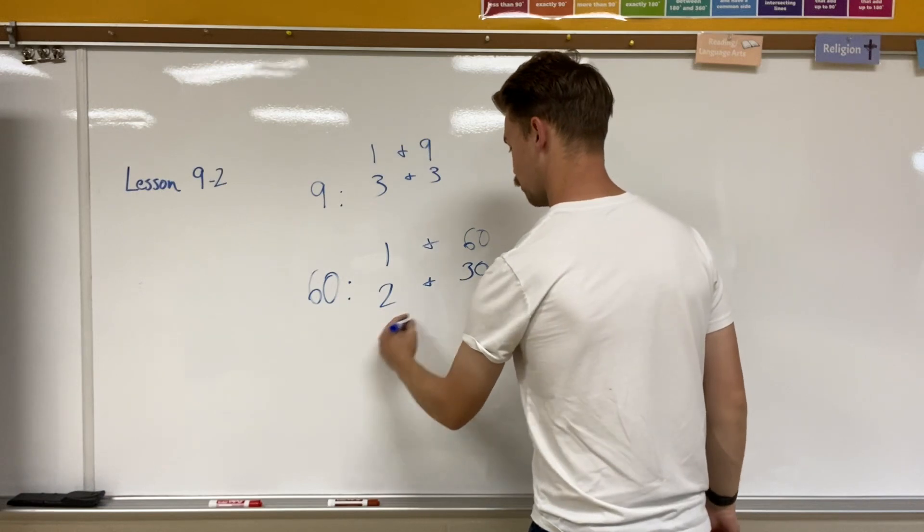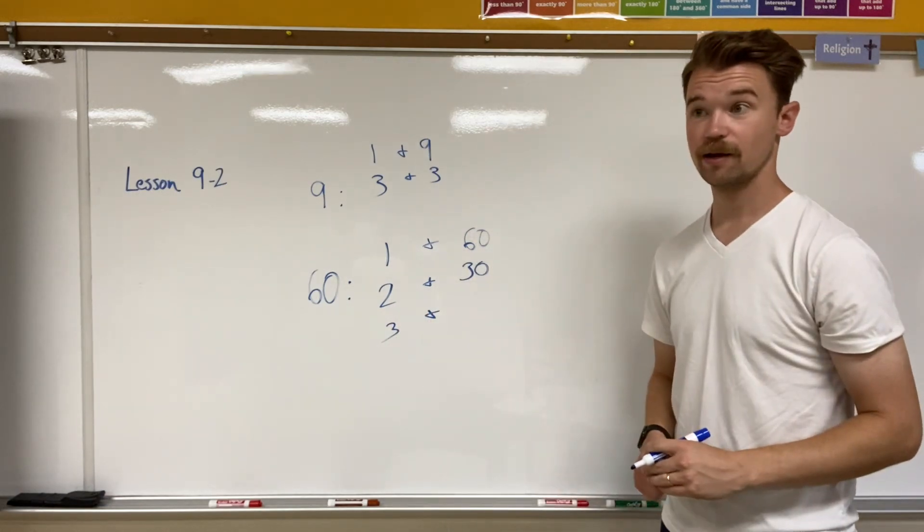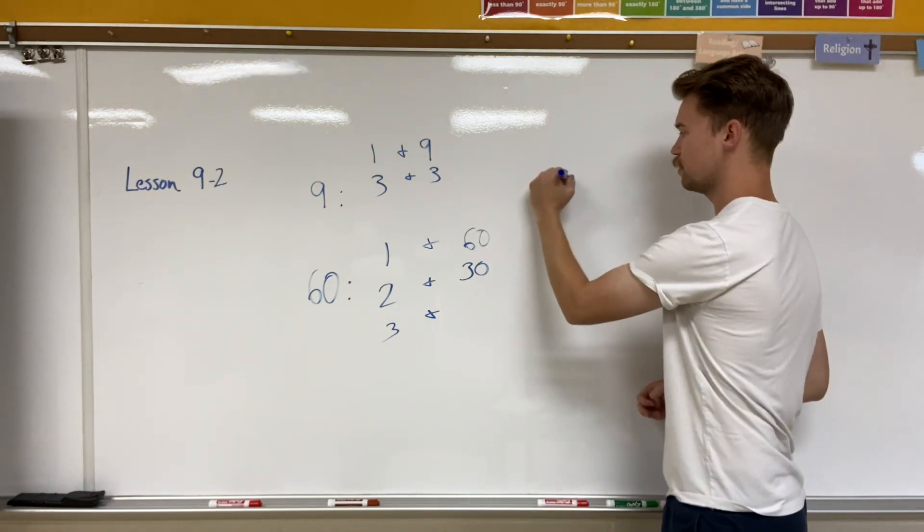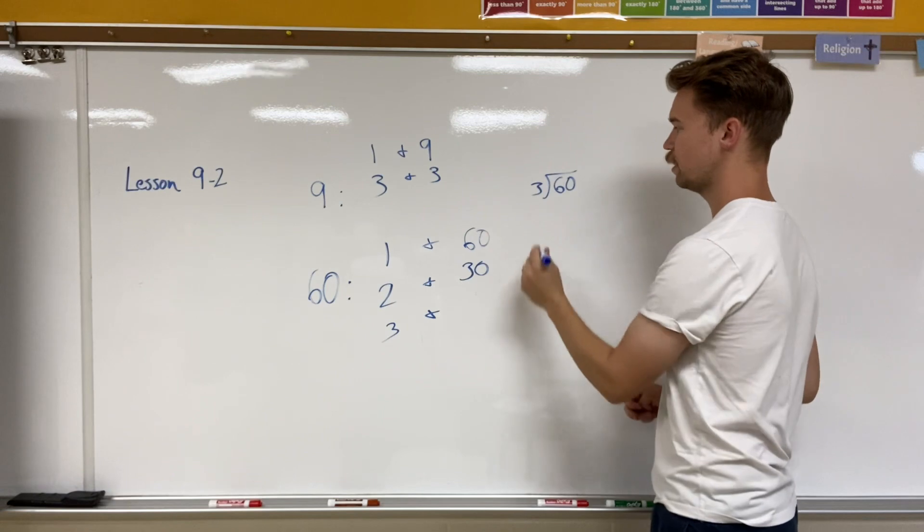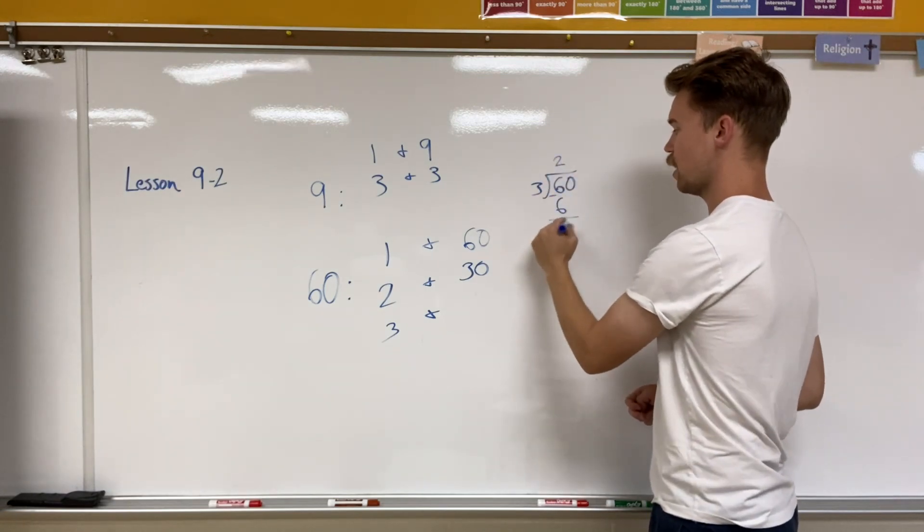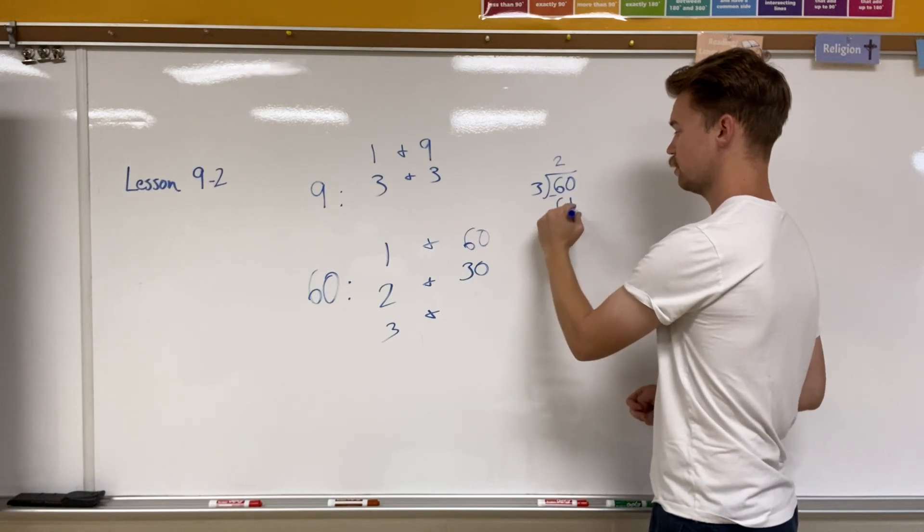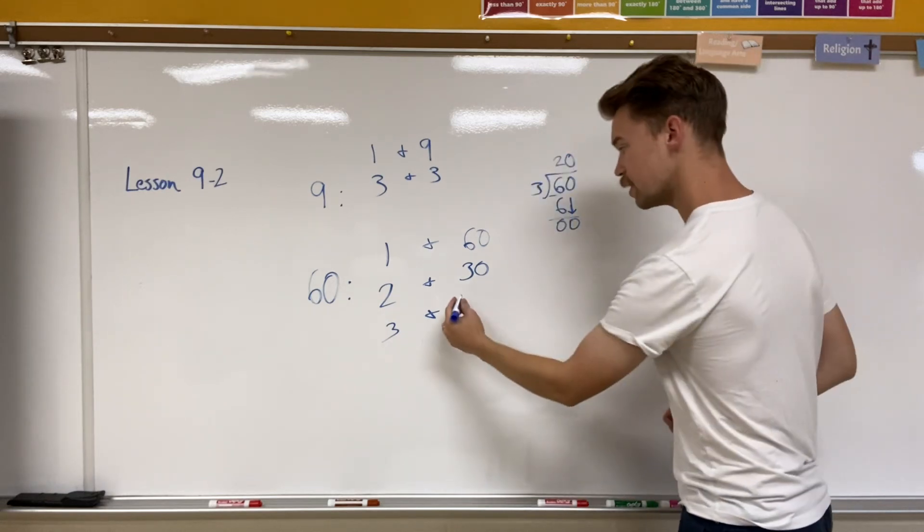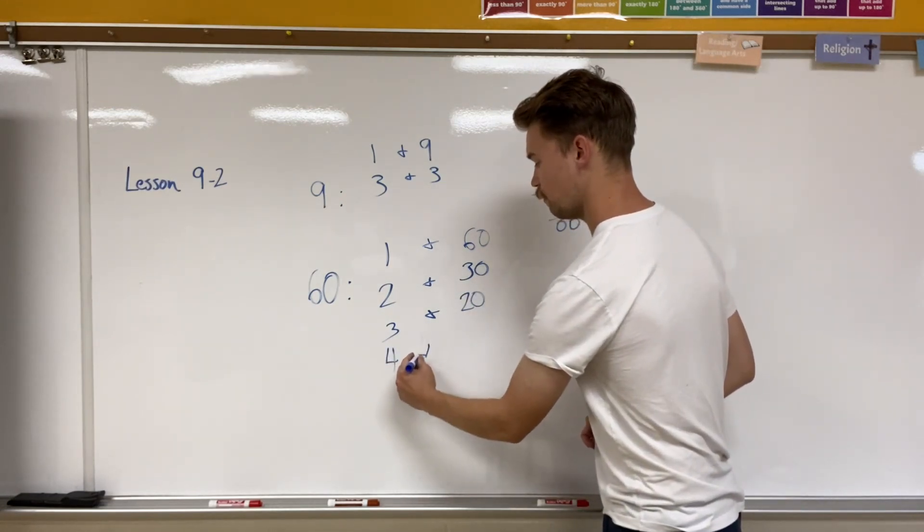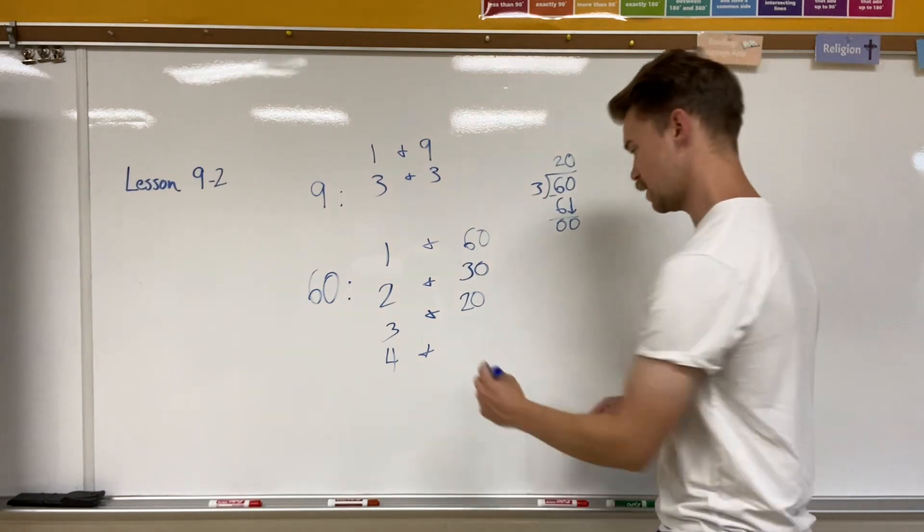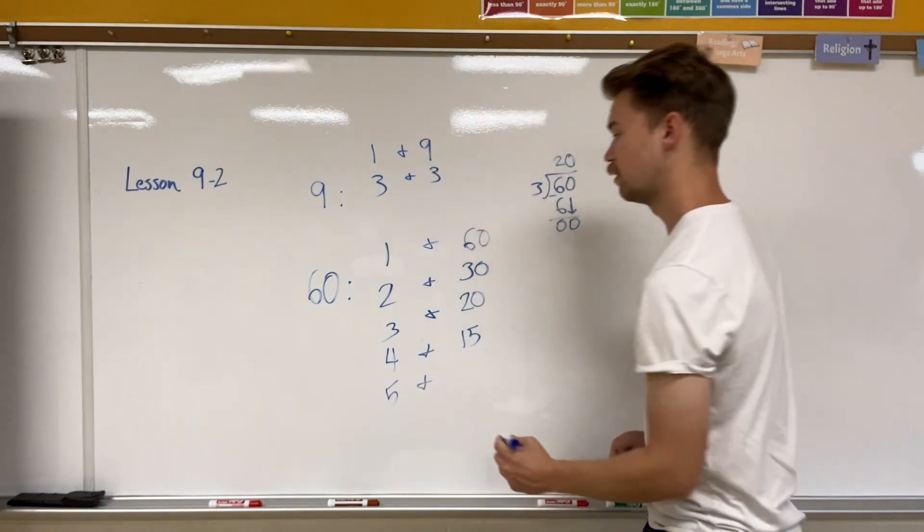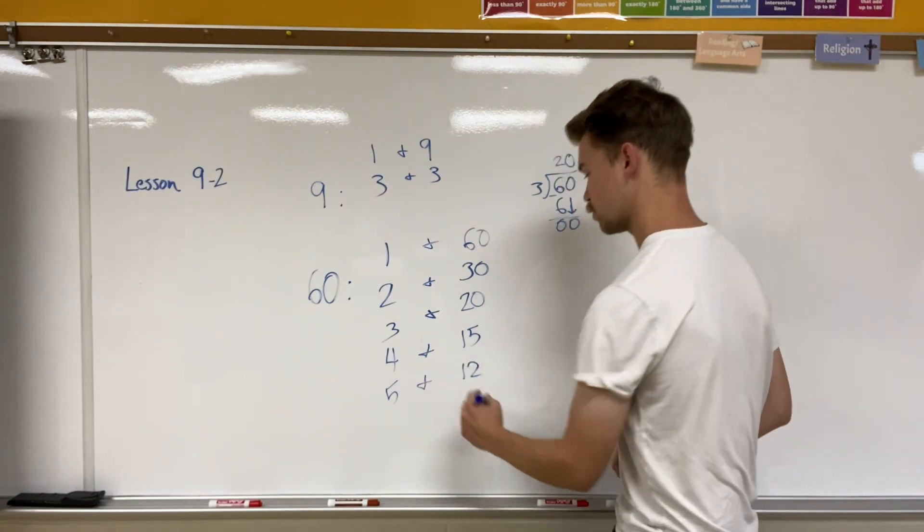Three. Well, if I split 60 into three groups, I'd have to do some long division on this one. 60 divided by three. Three can go into six two times, and that would be six. If I subtract and bring down my zero, how many times can three go into zero? Zero times. It's 20. Four. Well, that'd be four and 15. And five and 12. Because five times 12 is 60.